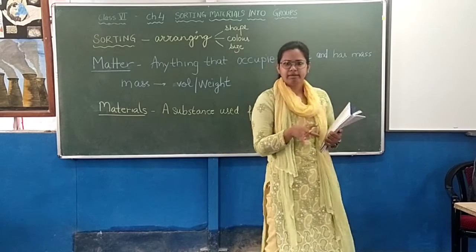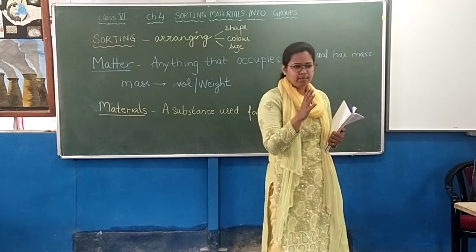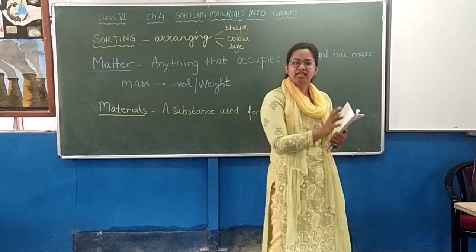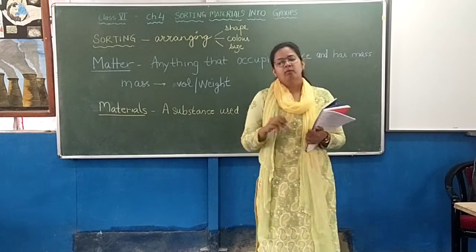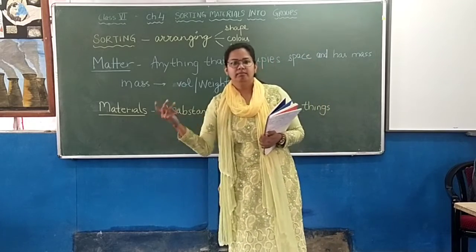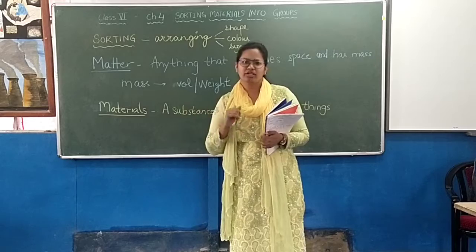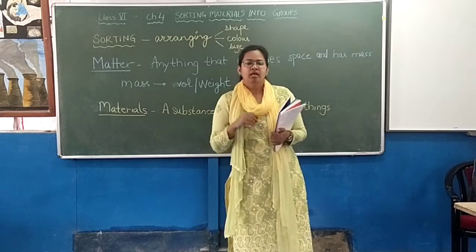For example, some material is made from tree, some material is made from paper, some material is made from metal. So we can sort them accordingly.